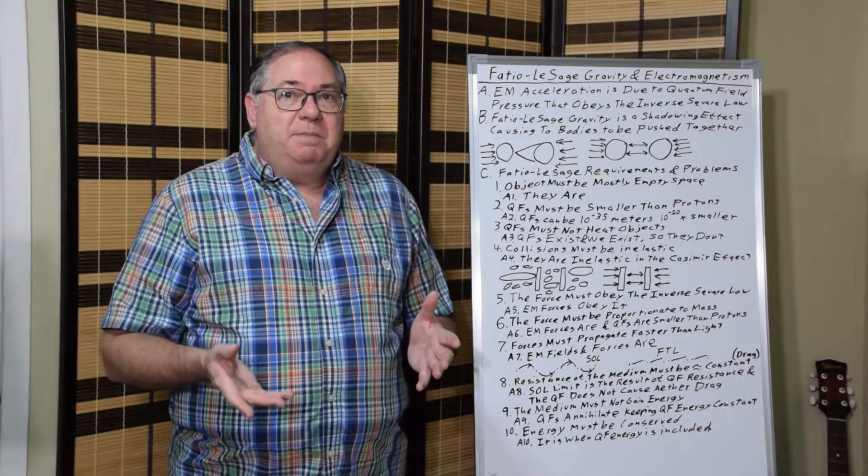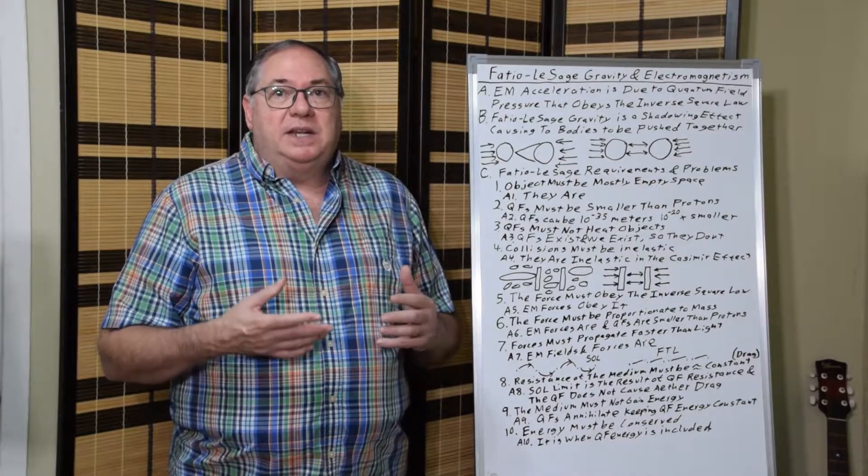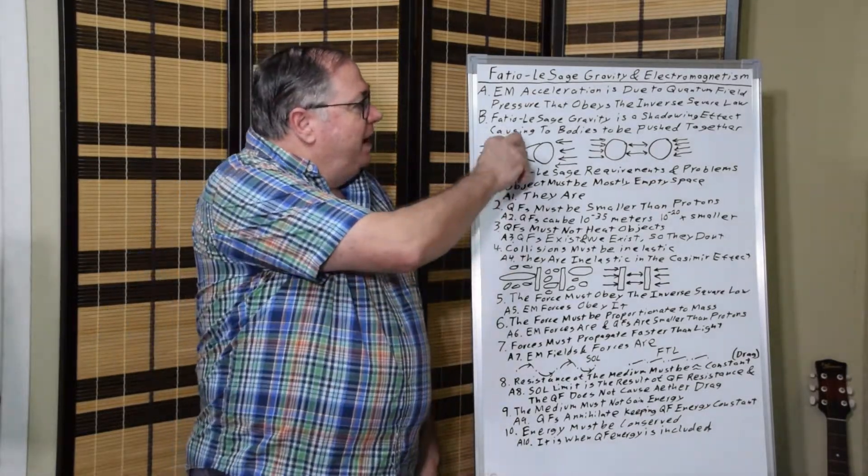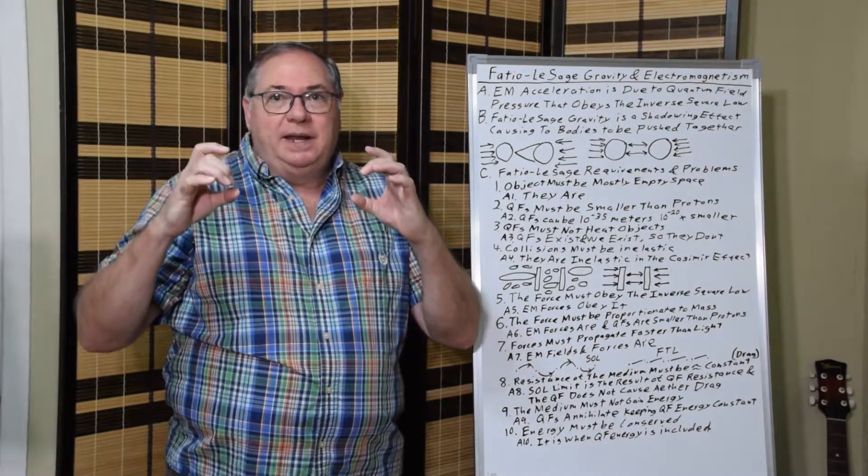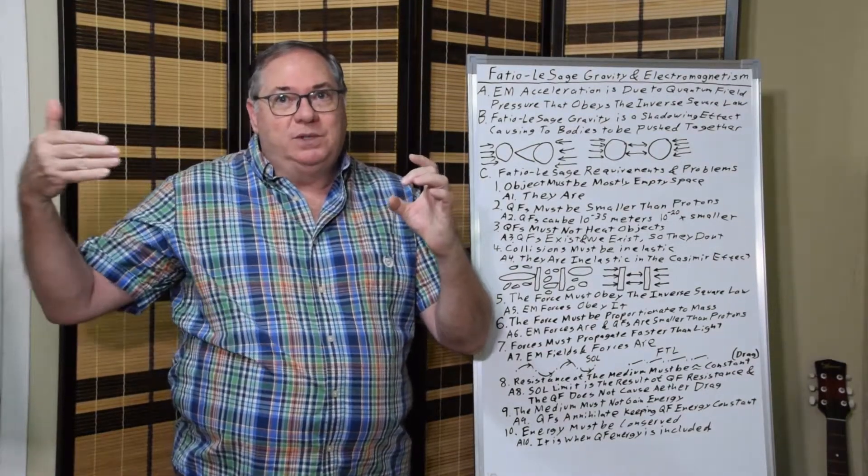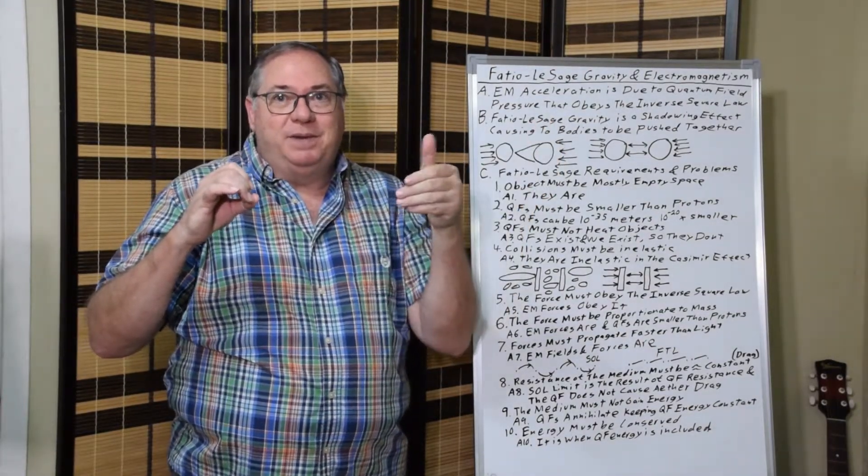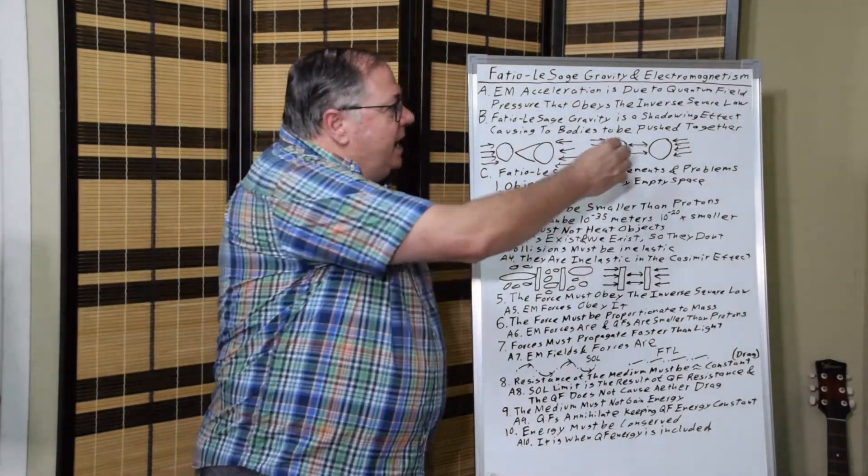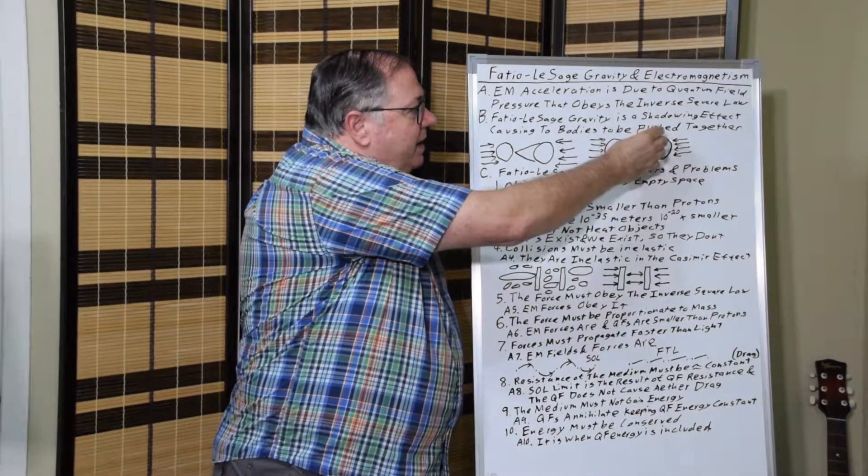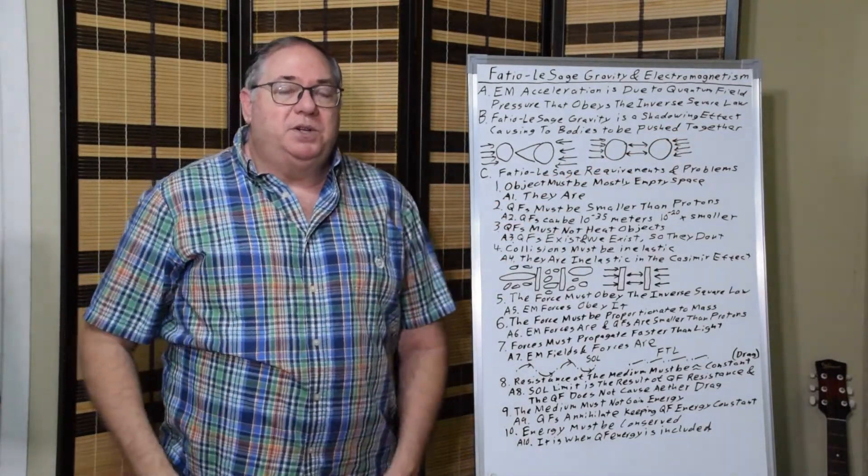And then B, we have Fatio-Lesage gravity, which has a shadowing effect where one body shadows another. When you have two bodies, this body shadows this body from forces coming this way, while this body shadows this body from forces coming that way. That way there's reduced energy and reduced force pushing them apart, so the bodies get pushed together.